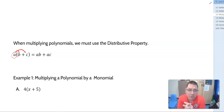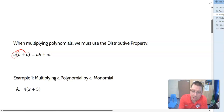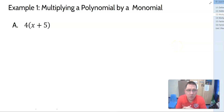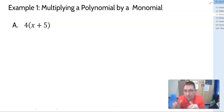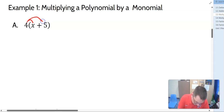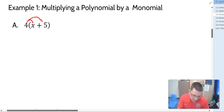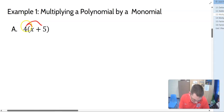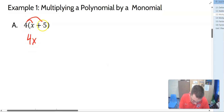Let's look at some examples of multiplying a polynomial by a monomial. In example 1A, we've got 4 times parentheses, and that means we're multiplying X plus 5. The 4 is going to multiply to both the X and to the 5. We can show these little rainbows. So 4 times X — they're not the same term, so we just write them together — 4X. And 4 times 5 is 20, so plus 20.